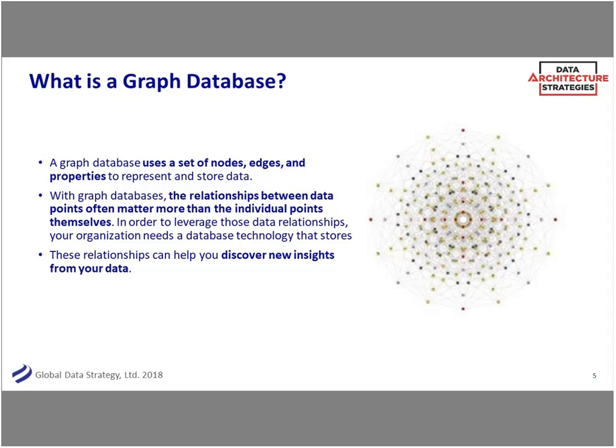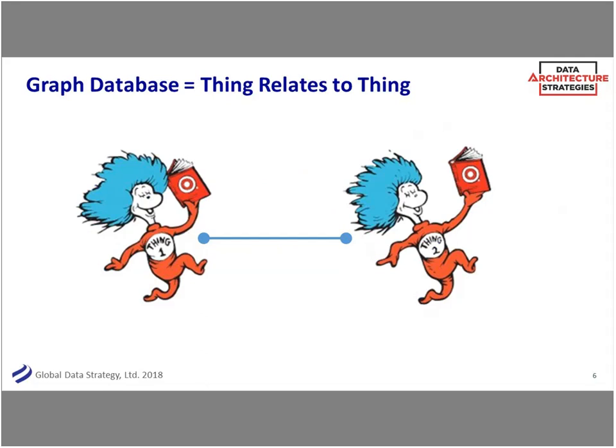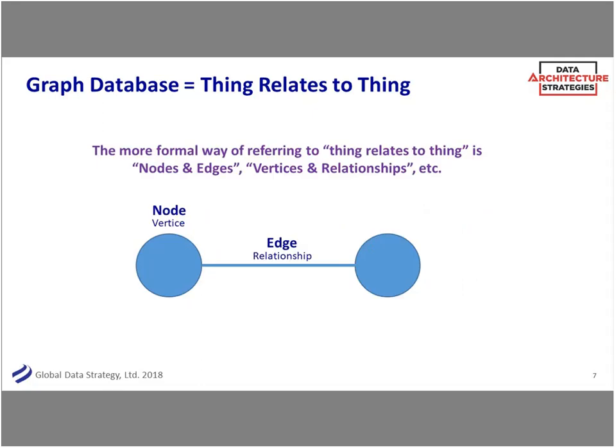At its easiest, I like a mnemonic: graph database is 'thing relates to thing.' If you're familiar with the Dr. Seuss cartoons - thing one and thing two - the line between them represents nodes and edges. You can call it nodes and edges, or vertices and relationships. Every technology has their slight take on that. But basically, it's thing relates to thing. The difference is that you track the relationships as much as you do the nodes themselves.